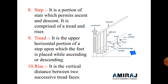Next is the step. A step is the portion of the stair which permits ascent or descent; it comprises the tread and riser. Next is the tread. The tread is the upper horizontal portion of the step on which we place the foot. The tread is generally made by RCC work, or finished with marble, stone, glass, or wood.